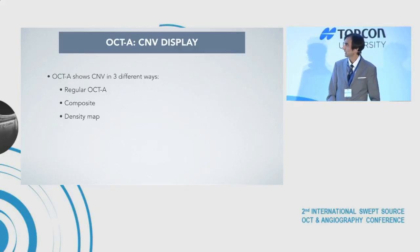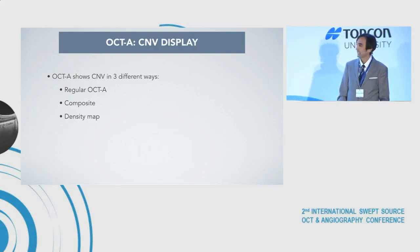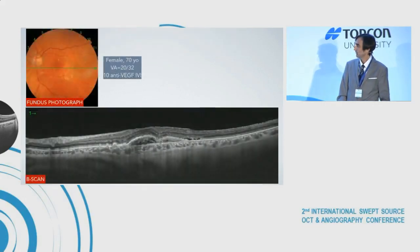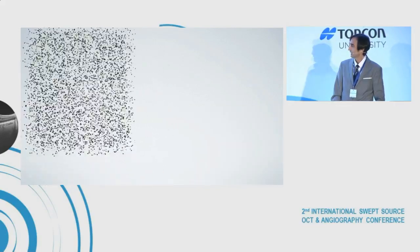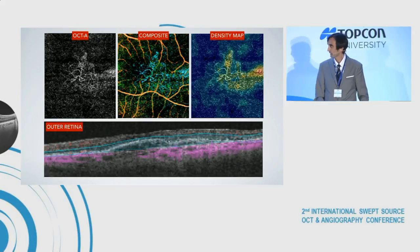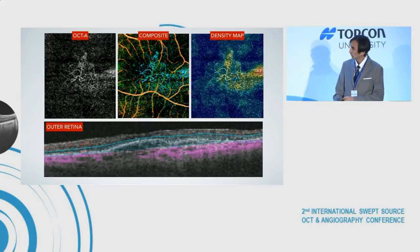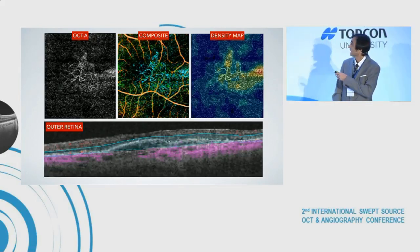OCT angiography shows basically three different ways to visualize the CNV: the regular OCTA, the composite image, and the density map. In this patient with an active wet AMD lesion, the B-scan is shown, and we can see these three different ways of seeing the CNV. With OCT angiography, it's important to know the slab location — which layer of the retina we are imaging. The composite image is a projection of the different retinal layers, and in the density map we can see the blood flow.